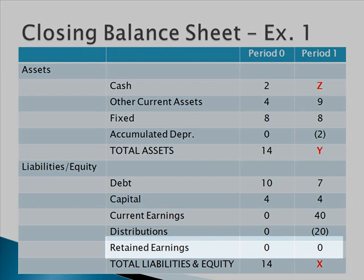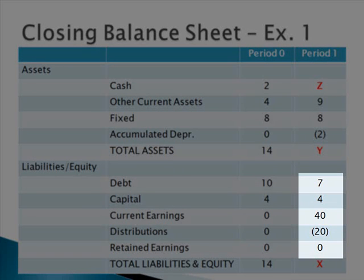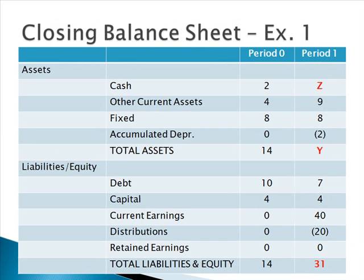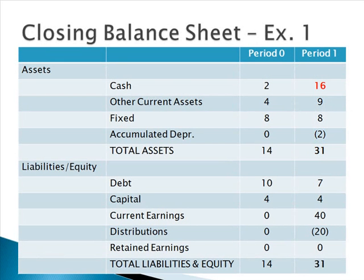Retained earnings in the liabilities and equity section is still going to be zero — nothing will go here until we actually close, so everything else is simply changes to the numbers we're given. The X portion is easy to figure out by adding together the debt, capital, current earnings, distributions, and retained earnings. We find that X is equal to 31. Since X and Y must always be equal on a balance sheet, Y is also equal to 31 and can simply be plugged in. Working backwards, we know cash, other current assets, fixed assets, and accumulated depreciation must equal 31, so Z must equal 16.